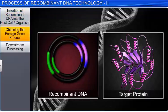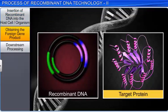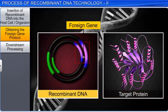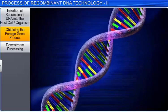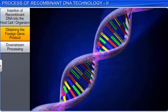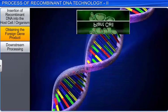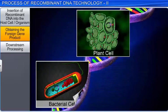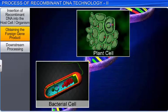Let us now understand how to obtain a target protein from a foreign gene of recombinant DNA. If any protein encoding gene is expressed in many hosts, such as plant cells, bacterial cells, and fungal cells, it is called a recombinant protein.